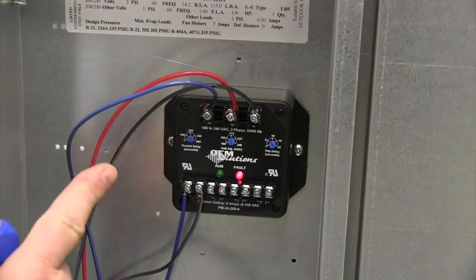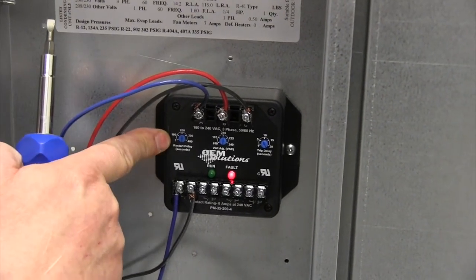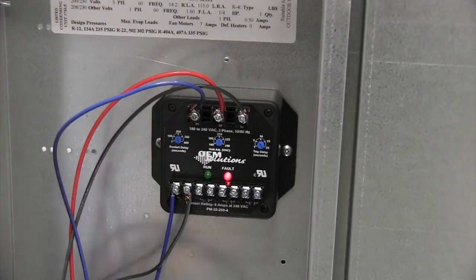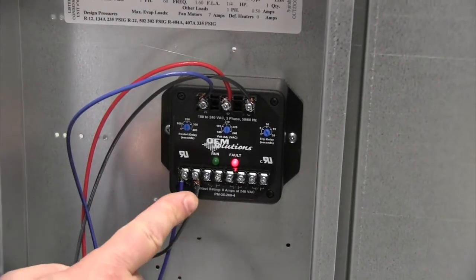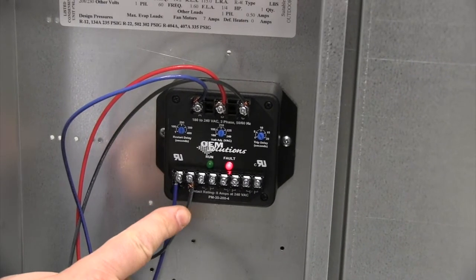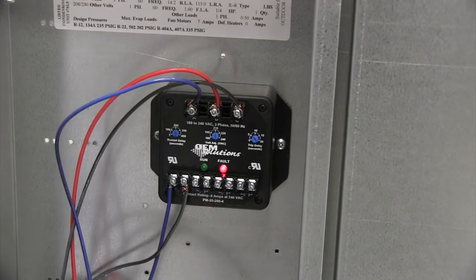After that set is reset, you need to wait your 200 seconds for the unit to recalibrate and start. If your fault light doesn't clear within the 200 seconds of the restart time delay, then you want to replace your phase monitor.